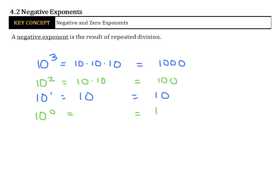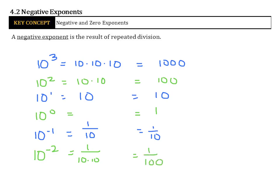Now when we go to 10 to the negative 1, this is actually going to be 1 over 10, so one-tenth. 10 to the negative 2 is 1 over 10 times 10, which is 1 over 100. And lastly, 10 to the negative 3rd is 1 over 10 times 10 times 10, which results in 1 over 1,000.